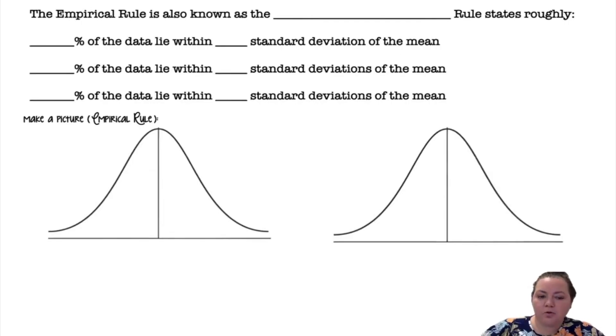All right, so the empirical rule is also known as the 68-95-99.7 rule and it states that roughly 68% of the data lie within one standard deviation from the mean, 95% lie within two standard deviations of the mean, and 99.7% of the data lie within three standard deviations of the mean.